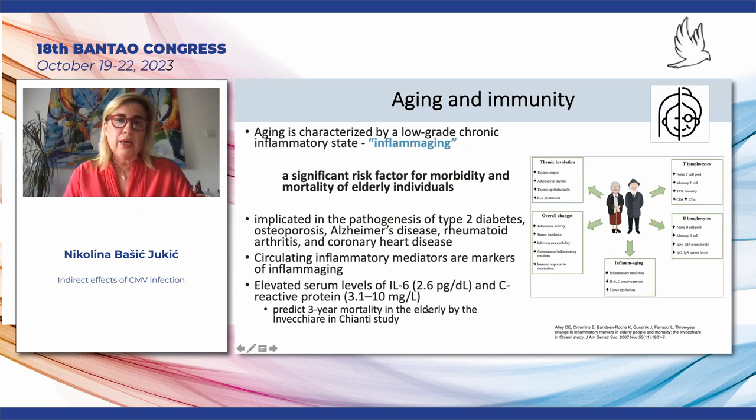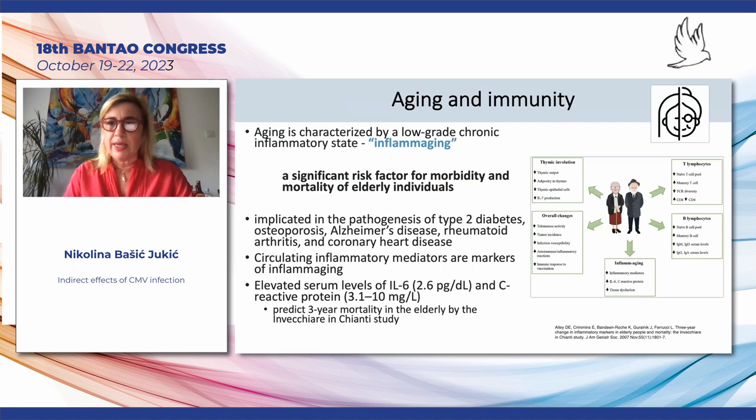If you look at aging and immunity, aging is characterized by a low-grade chronic inflammatory state. It is called inflammaging, and it is a significant risk factor for morbidity and mortality of elderly individuals. It is well known to be implicated in the pathogenesis of type 2 diabetes, osteoporosis, but also Alzheimer's disease and coronary heart disease.